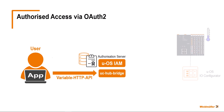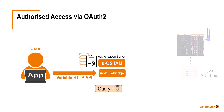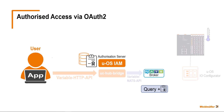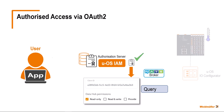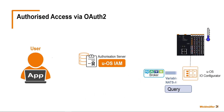UOS IAM enters this information into an internal database and sends a copy of the token back to the app. If the app now wants to call the variable HTTP API, the token sent by the UOS IAM is also included. The UC HubBridge converts this call to variable NATS API and forwards it to the NATS broker. This then contacts the UOS IAM and checks whether the token is available there and is therefore still valid. The NATS broker also checks whether the token contains the required scope — that means the appropriate authorizations for the desired access. If everything matches, the broker forwards the call to the requested resource, in our case to the UOS Configurator, which then sends back the requested values.